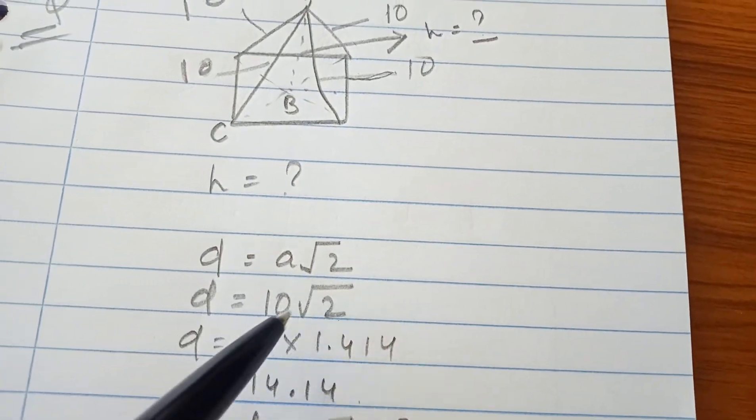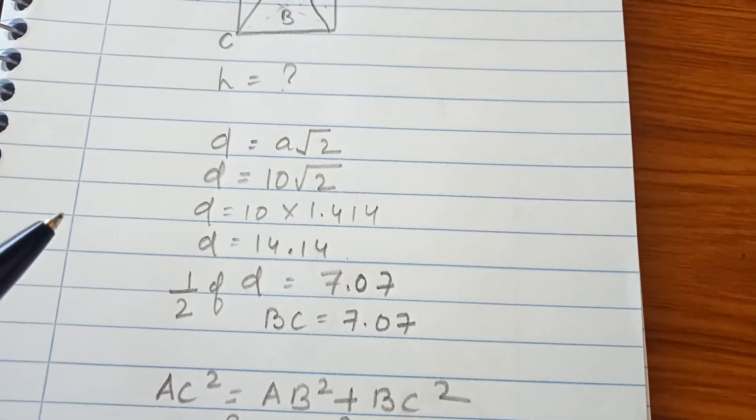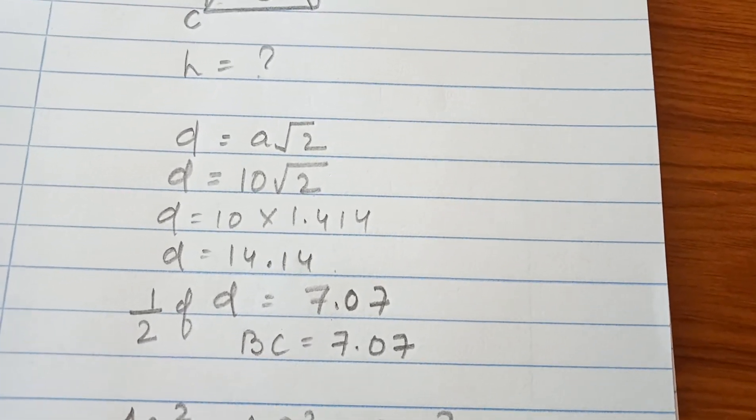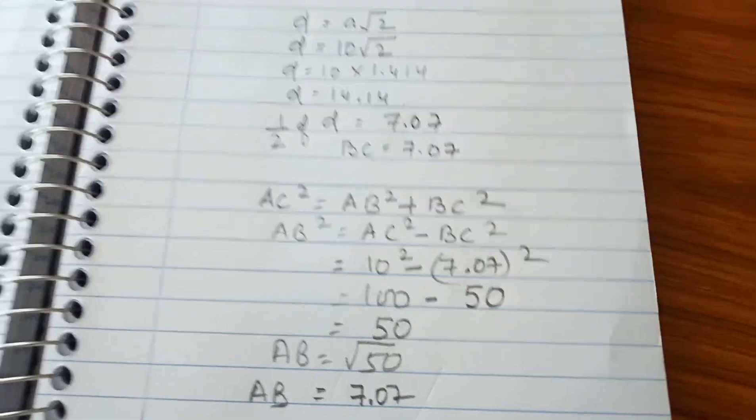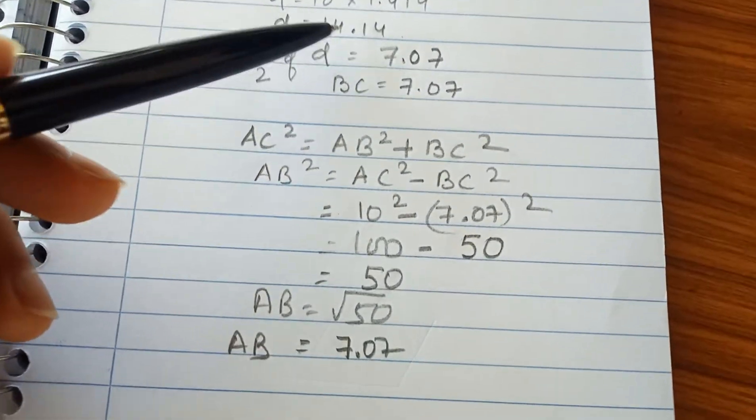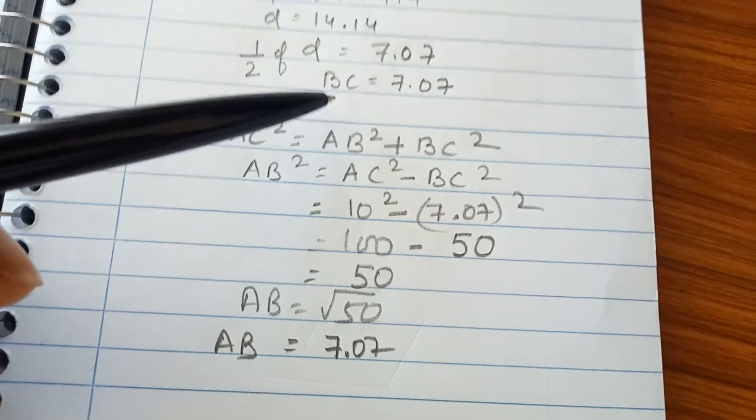And d is equal to this, and half of d is equal to this. So the d is equal to this, and then half of d is equal to this, and BC is equal to this.